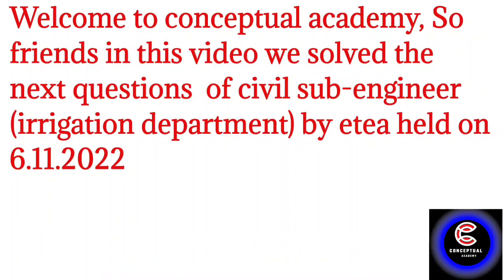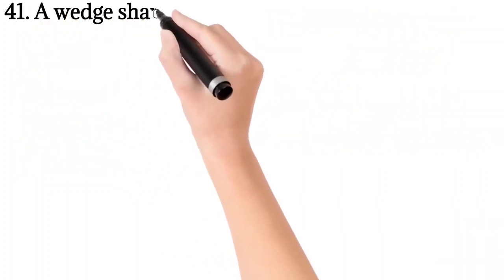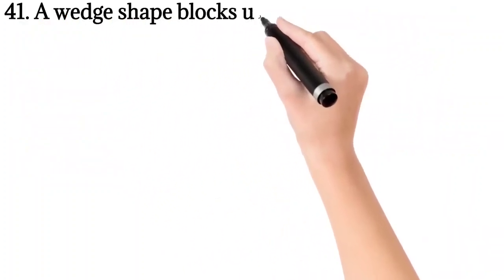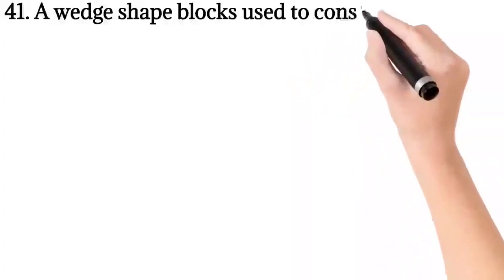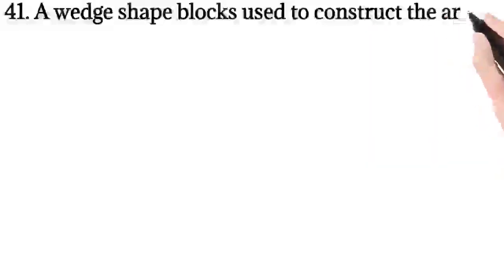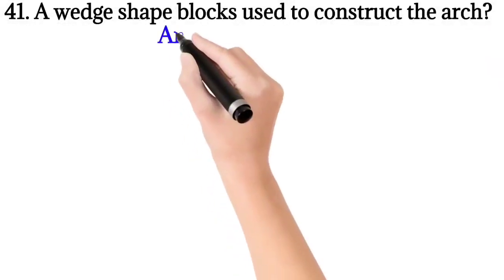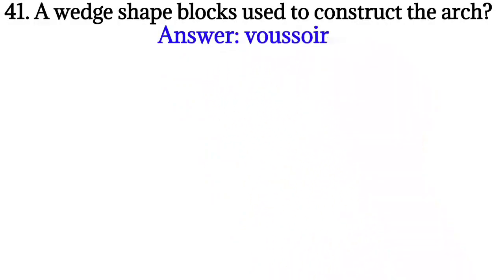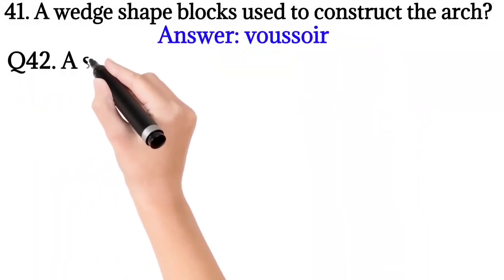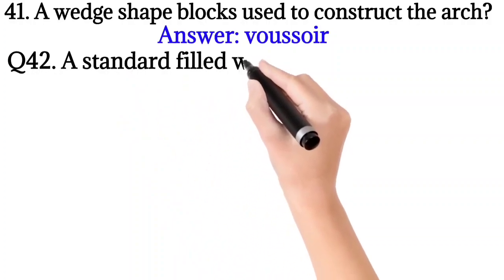So friends, without wasting time, let's start the video. Question number 41: A wedge-shaped block used to construct the arch? So the answer is voussoir. Question number 42: A standard filled weld makes an angle with the sides?